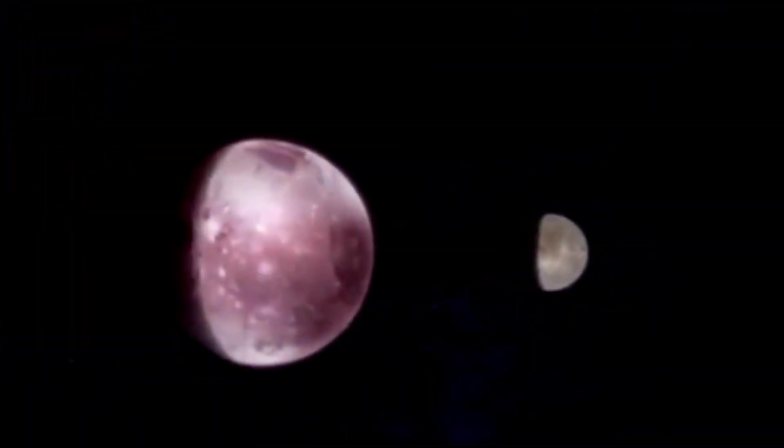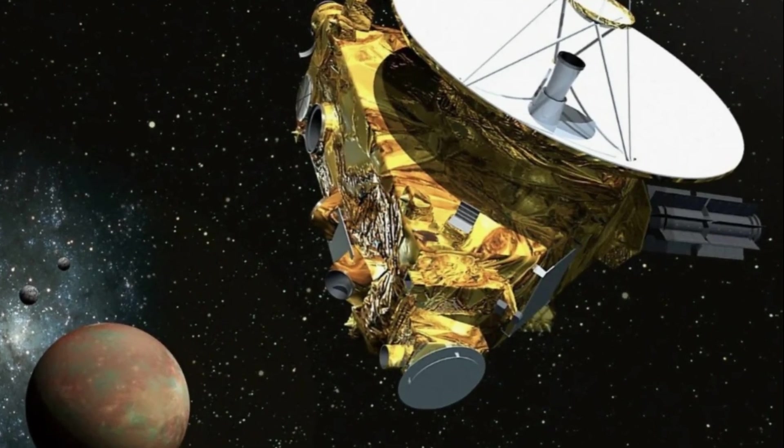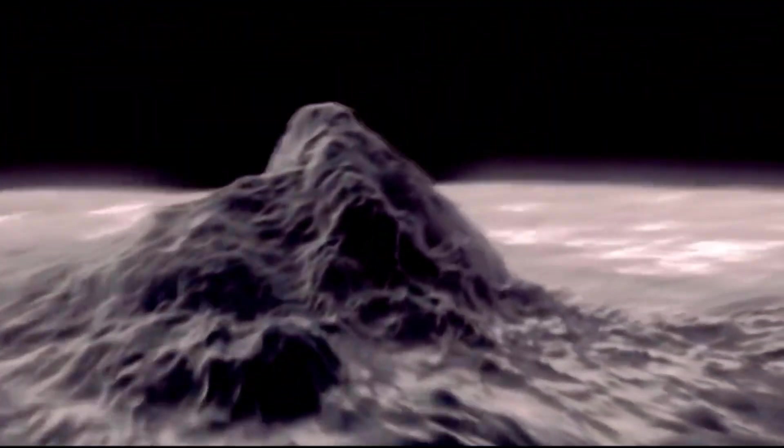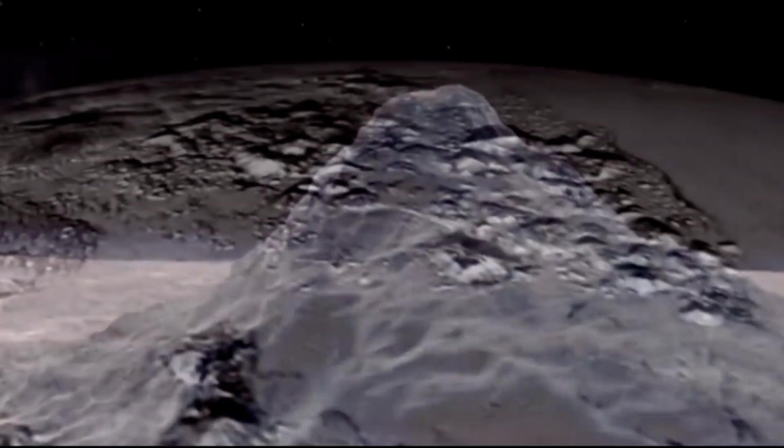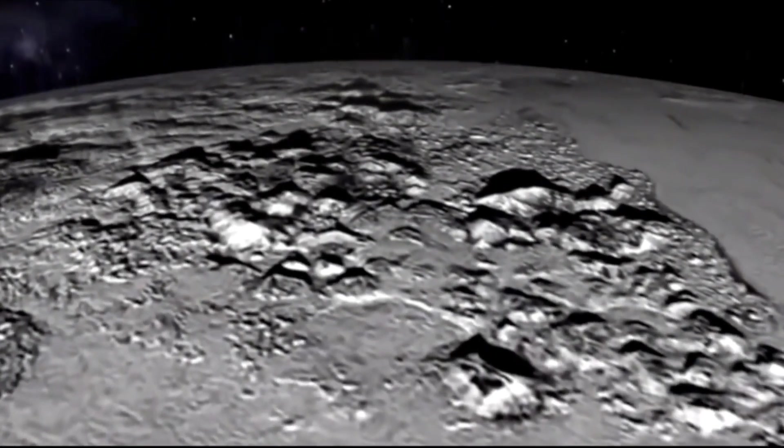According to data obtained from the New Horizons spacecraft, Pluto's diameter is only 1,478 miles, making its surface area smaller than that of the former USSR, but still larger than that of modern Russia or the USA. Compared to the Moon, Pluto would be almost half its size. Now you understand why it was classified as a dwarf?